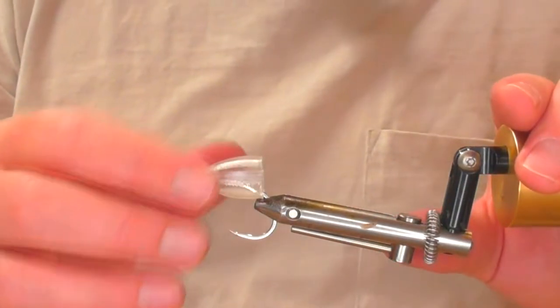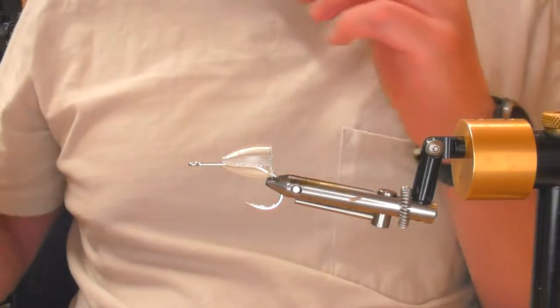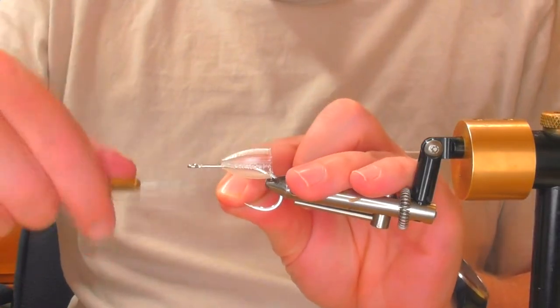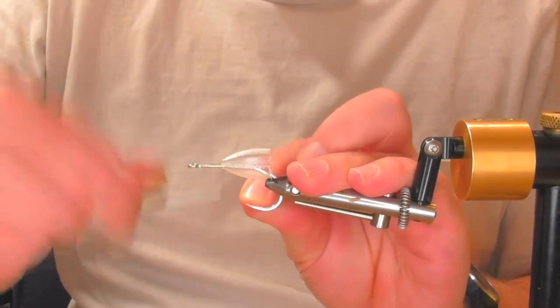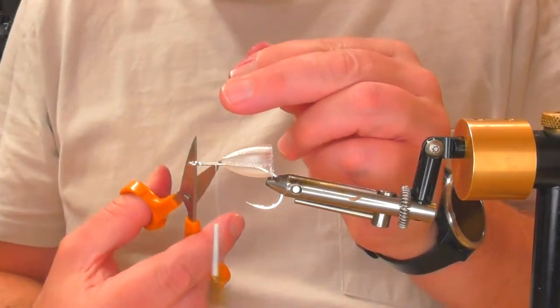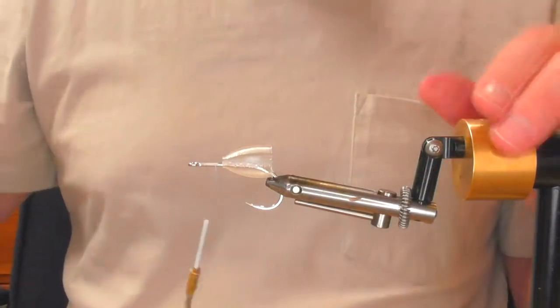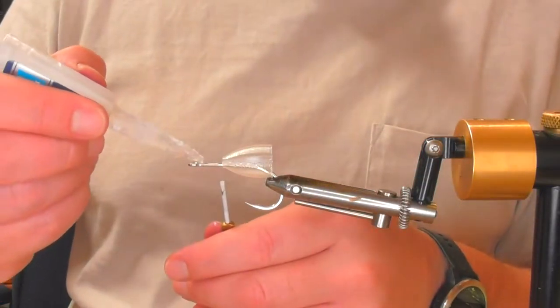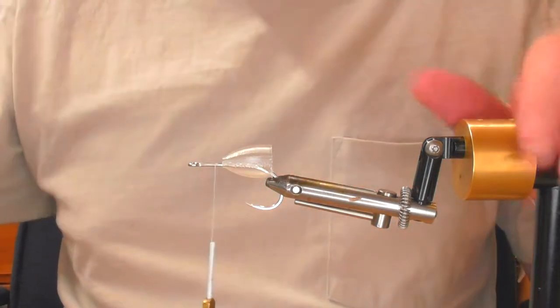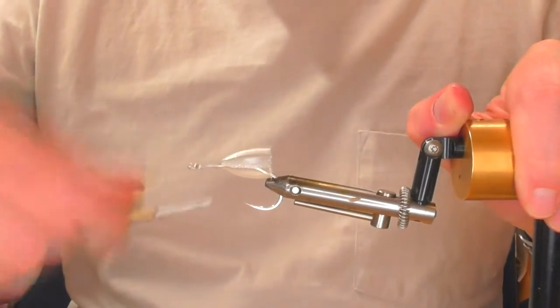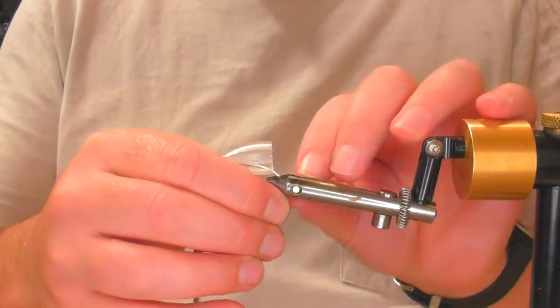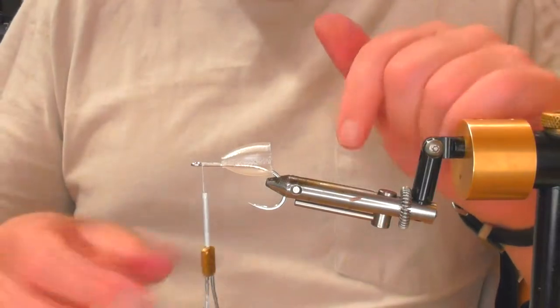I'm going to pop that in my vise. So this is going to be a bit of a slimmer profile, and the thread as normal is a 150D generic gel spun thread, so nice and strong. I've just popped a little drop of super glue there just to lock that thread onto the hook shank so that it doesn't move.